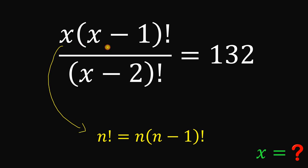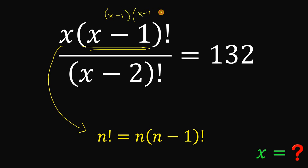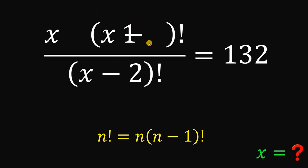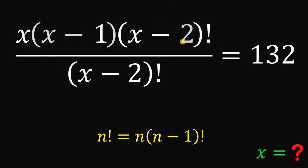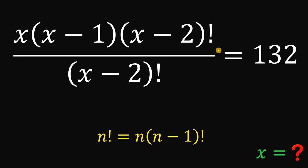Now, we can apply this also to (x minus 1) factorial. This simplifies to (x minus 1) multiplied by (x minus 1 minus 1) factorial — or simply (x minus 1) multiplied by (x minus 2) factorial.